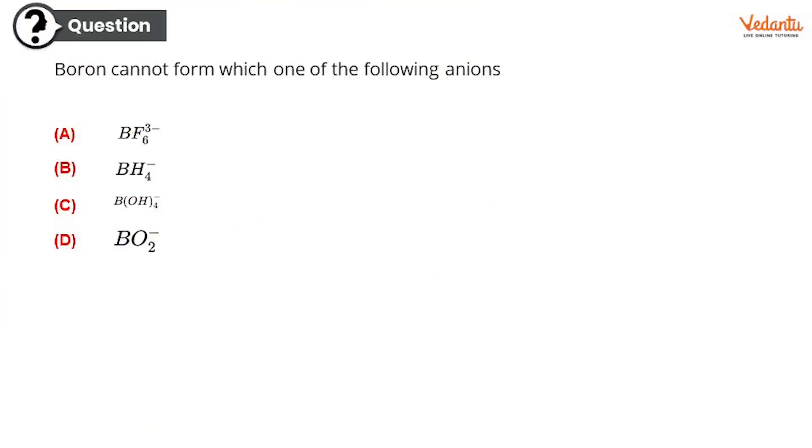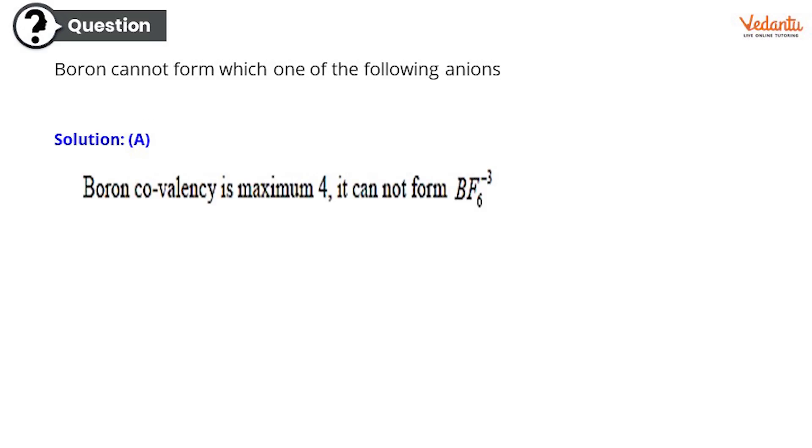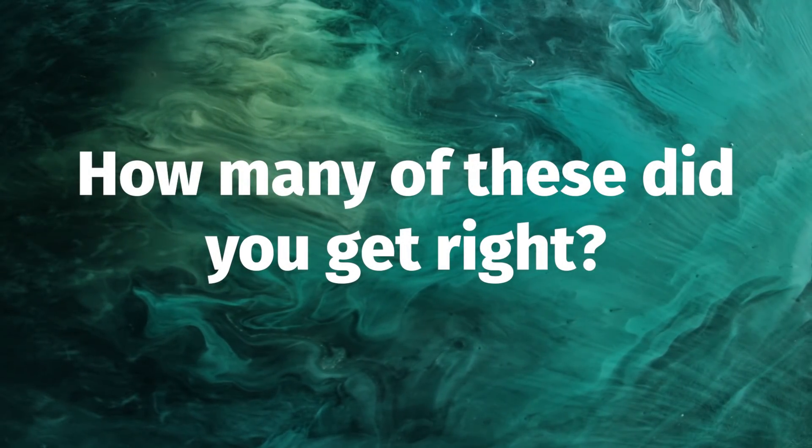So moving ahead. Boron cannot form which of the following anions? BF6 3 minus, BH4 minus, B(OH)4 minus or BO2 minus. Which is the correct response? And the correct answer is BF6 3 minus. And here is the explanation for this. It's simply Boron's covalency is maximum 4 and it cannot form BF6 3 minus. I guess it is pretty simple, isn't it? Even AIIMS asked these kind of simple questions.